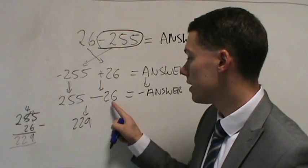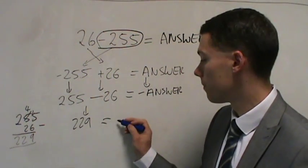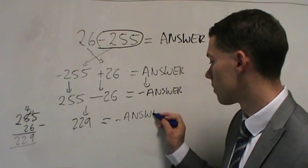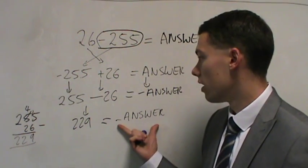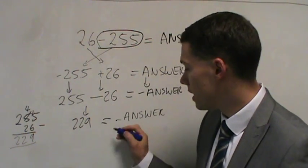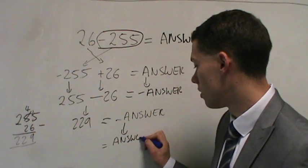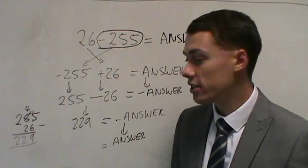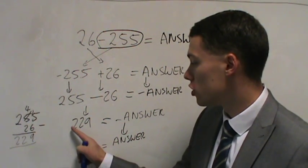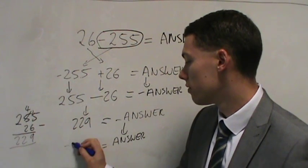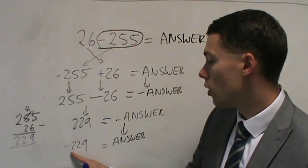That equals that. So 229 equals our negative answer. But remember we don't actually want our negative answer, we want our positive answer. So we're going to go from a negative to a positive. And if we change the symbol of one part of the equation, we have to change the symbols of all the parts. So this goes from positive to negative. So the final answer is minus 229.